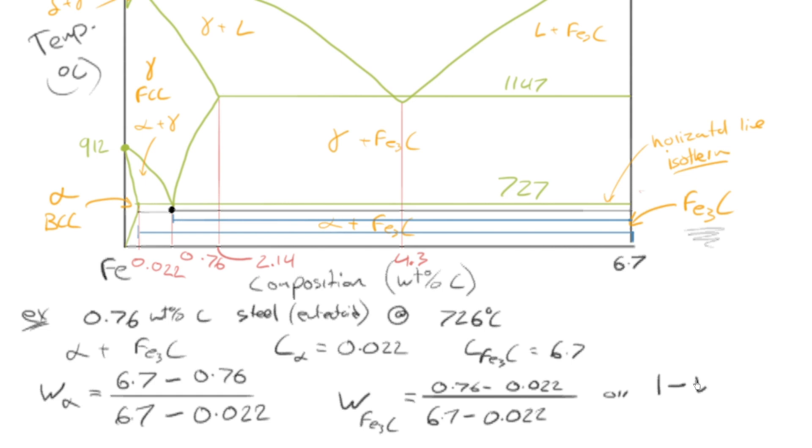Or 1 minus the weight fraction of alpha, if you've already calculated that. These two weight fractions have to add to 1 because there's only two phases, only alpha and Fe3C. Alright,